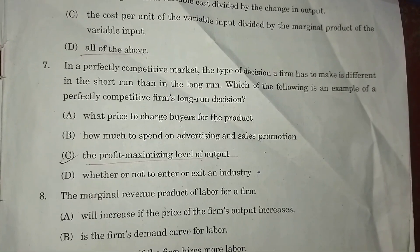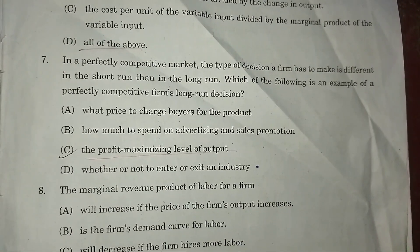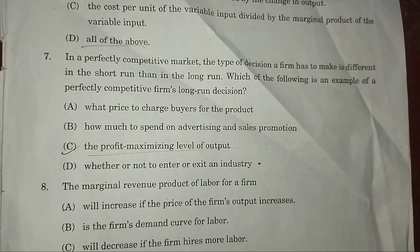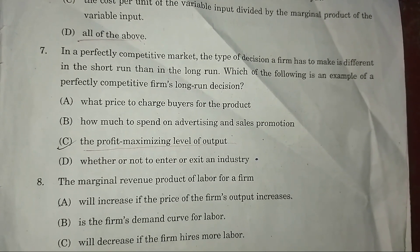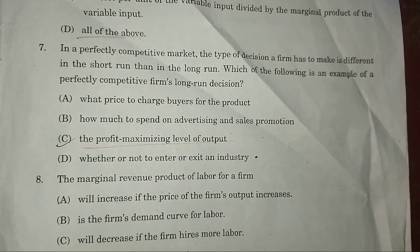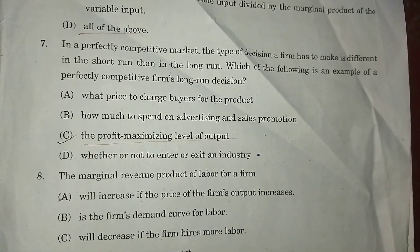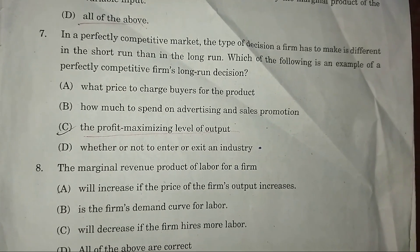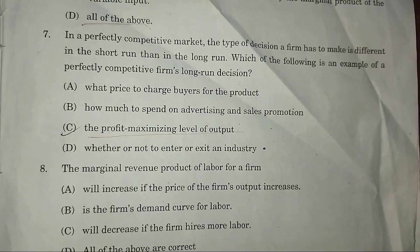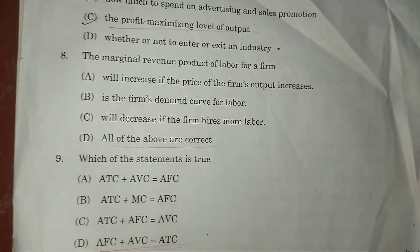Question 7: In a perfectly competitive market, the type of decision a firm has to make differs between the short run and long run. Which of the following is an example of a perfectly competitive firm's long-run decision? Answer: C — the profit-maximizing level of output.